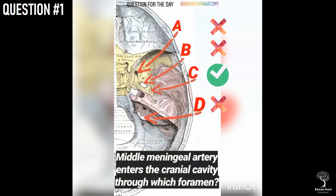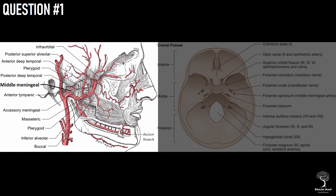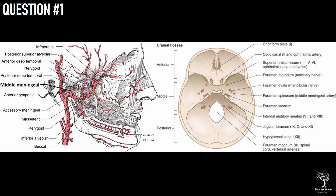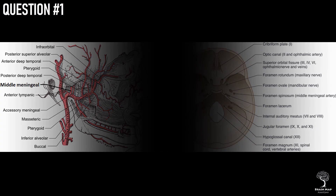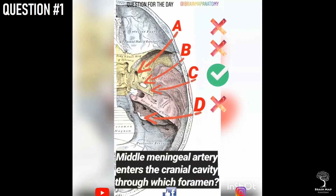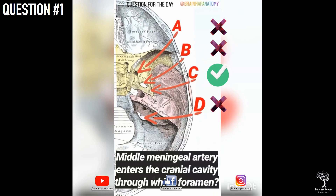The image shown is the interior of the skull with the skull vault removed to visualize the cranial fossa. The cranial fossae are divided into three: anterior cranial fossa, middle cranial fossa, and posterior cranial fossa. Options A, B, and C show foramina in the middle cranial fossa, while option D lies in the posterior cranial fossa.